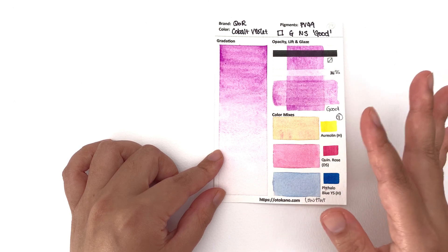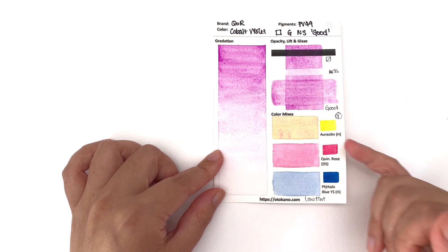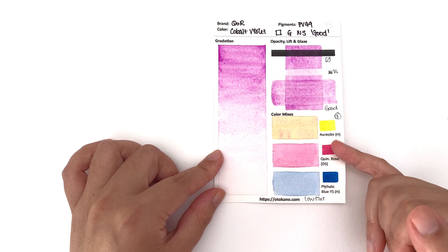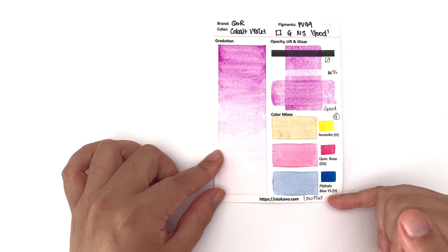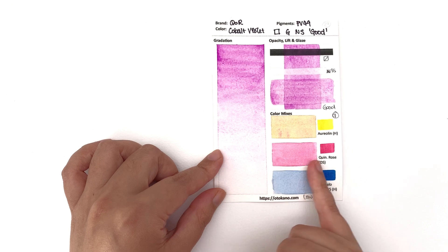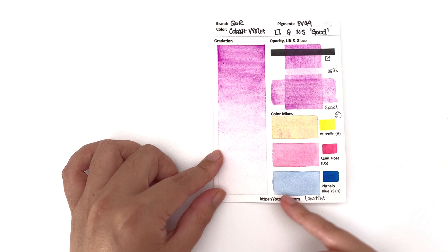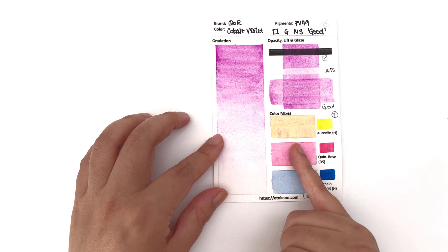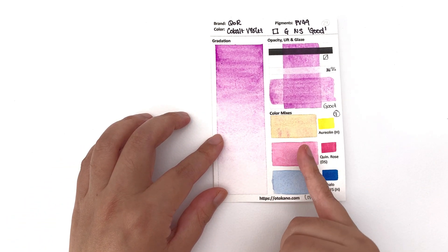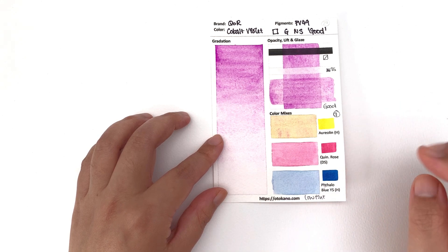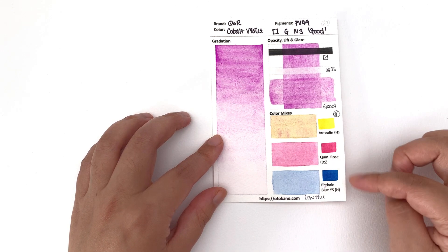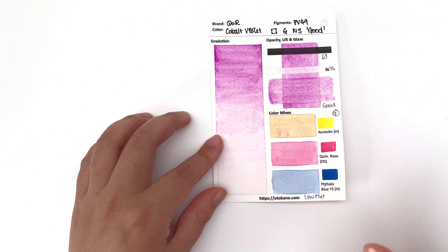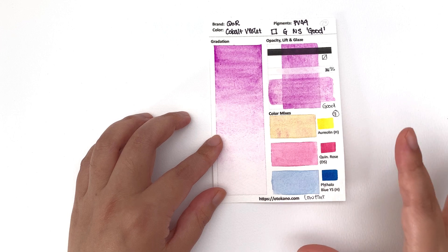In terms of color mixes, it's very low tinting strength and I actually struggled to get my high tinting strength color to mix well to a point where you can still see the cobalt violet. You can see the cobalt violet happening in the aureolin, that's really nice, but with these two the cobalt violet is kind of lost. You could probably get this kind of color without using the cobalt violet. But if you have other softer lower tinting strength colors, this will mix beautifully with that for you.